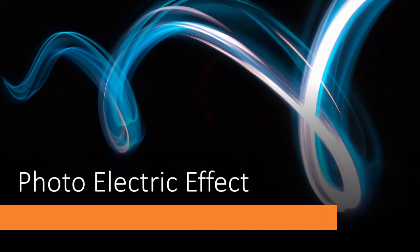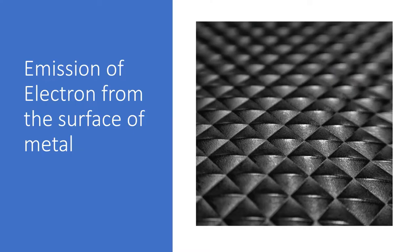In this video, we are focusing on how electrons could be emitted from the surface of metals, especially by using light of appropriate frequency. There are different ways to emit the electrons from the surface of metals.